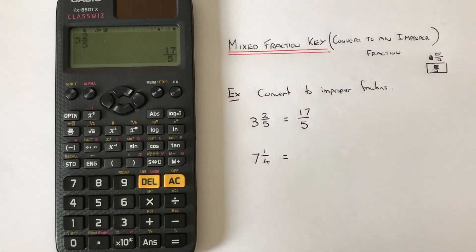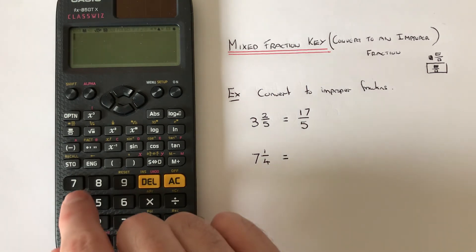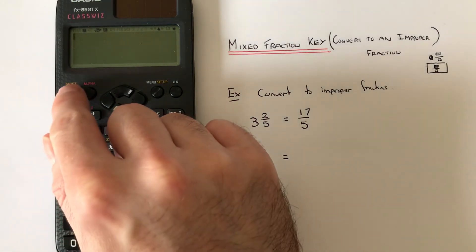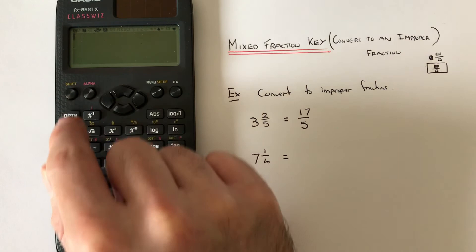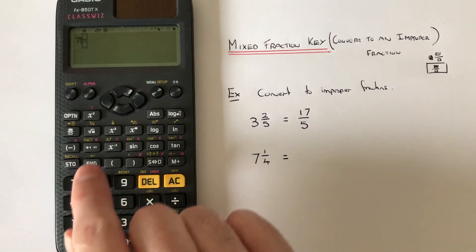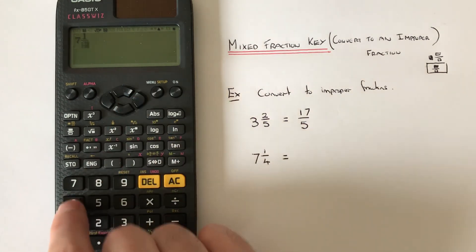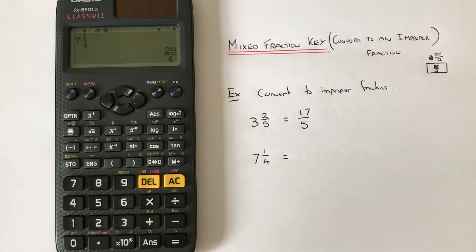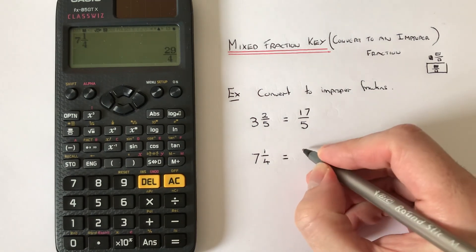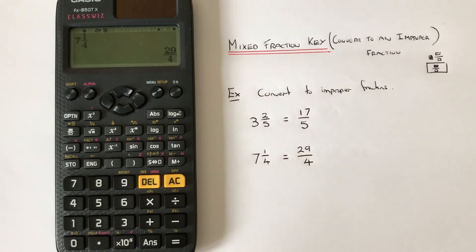Example two is 7 and 1/4. Press the mixed fraction key — Shift Fraction — then type 7, right key, 1, right key, 4, and press Equals. You can see it's been converted into an improper fraction. Thanks for watching guys, see you next time.